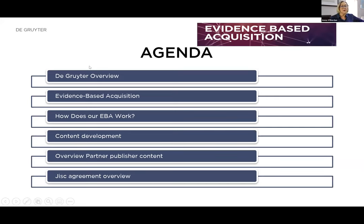I'm going to introduce our EBA model and explain how it works. In terms of content coverage, I'm going to leave that to our editorial colleagues. I'm going to focus on the content offered by our publisher partners, and I'm also going to cover details of the collections available within the De Gruyter JISC EBA agreement, together with the pricing and the other terms and conditions of the JISC agreement. But before we get into the detail of our EBA business model, I'll start with a brief introduction to De Gruyter.